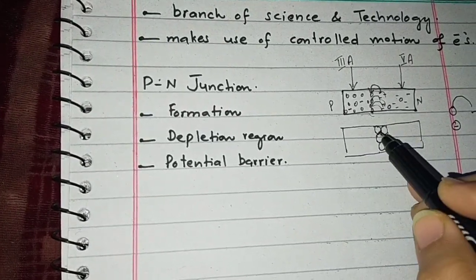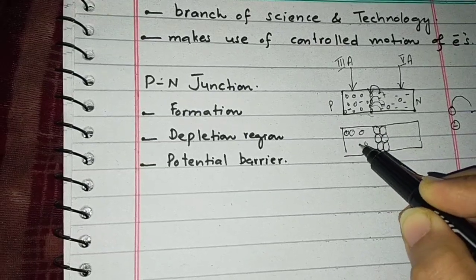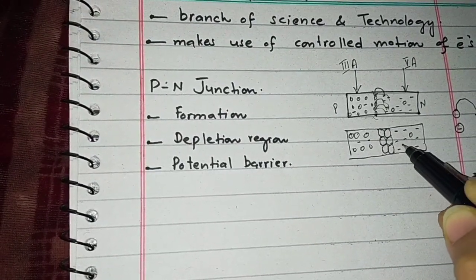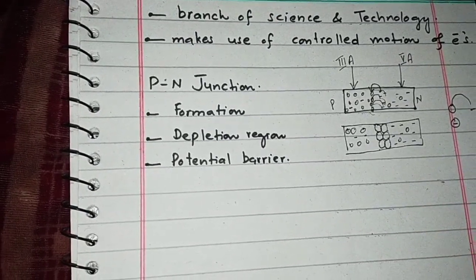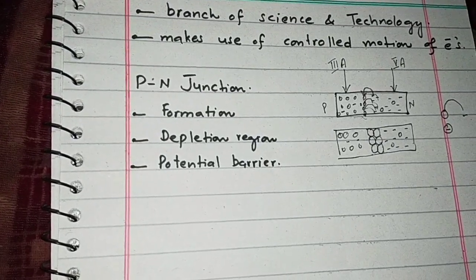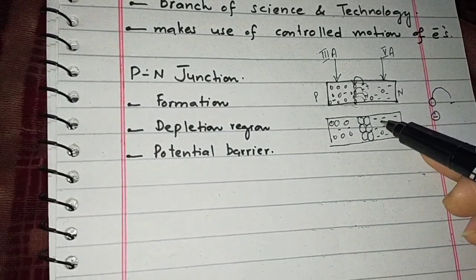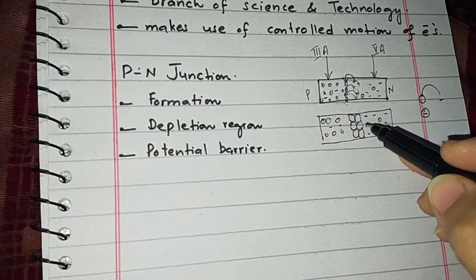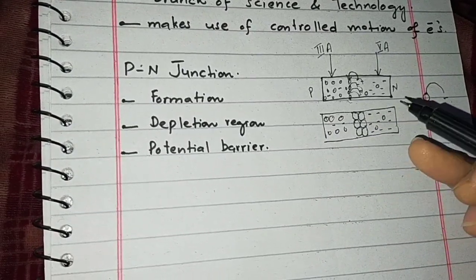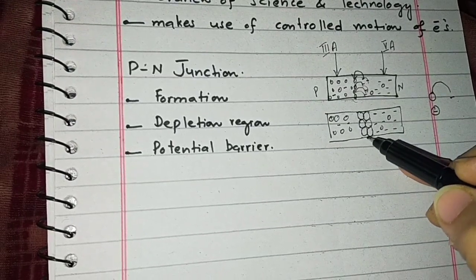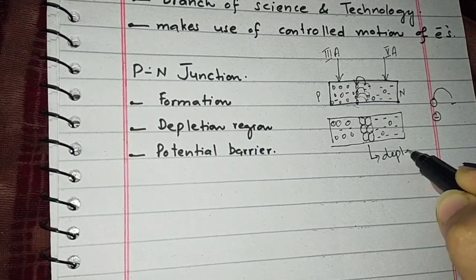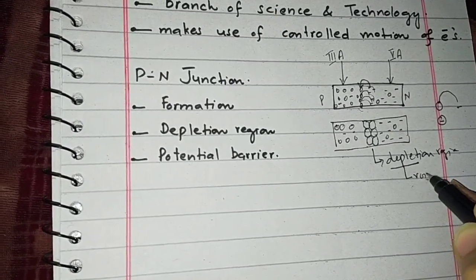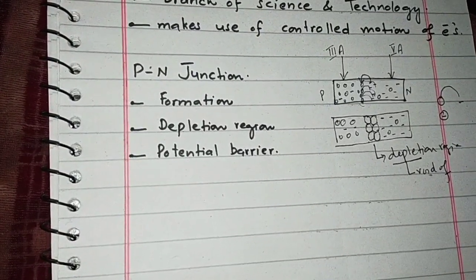After recombination, we have bound charges — holes with some minority charges on the P side and electrons with some minority holes on the N side. This layer serves as a boundary, a junction. For electrons to cross this boundary or region, they must have some extra high energy. This region that is free of any free charge is known as the depletion region. The word depletion comes from 'deplete,' meaning wiped off or emptied — there is no free charge here.